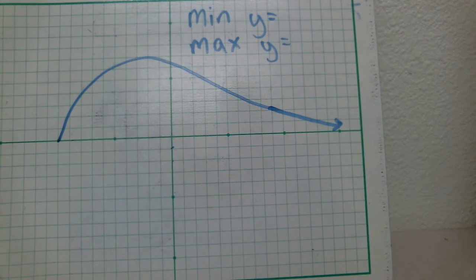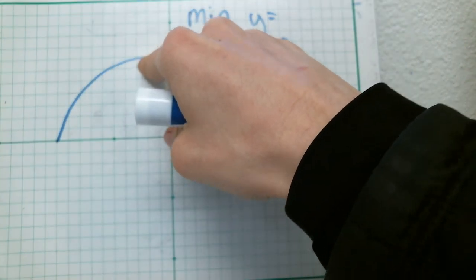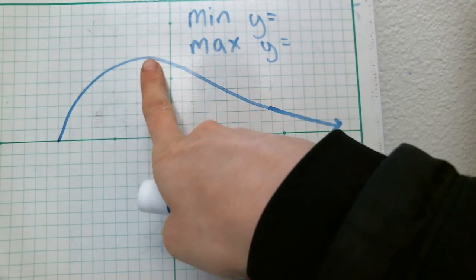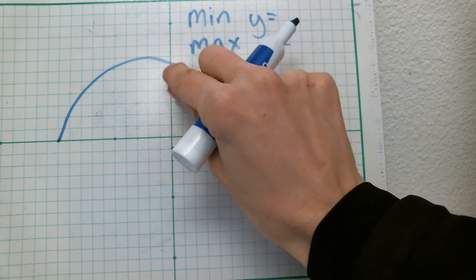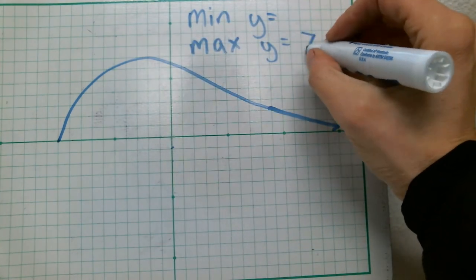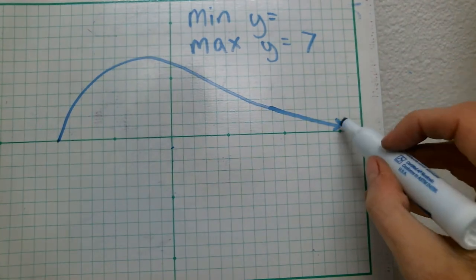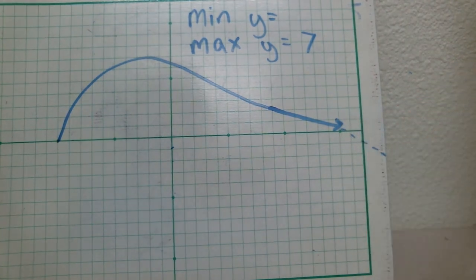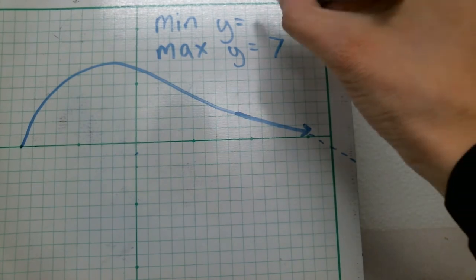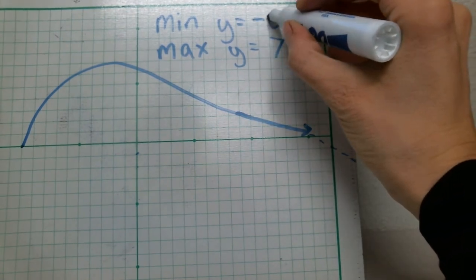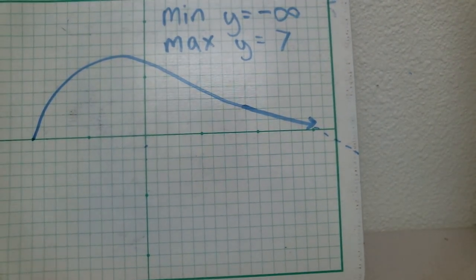Looking at the graph, it starts here, goes up to a high point — that's the maximum. The y value there is positive 7, so the maximum is y equals 7. Over here there's an arrow, meaning this line continues downward to infinity. So the minimum is going to negative infinity, because it keeps going down forever.